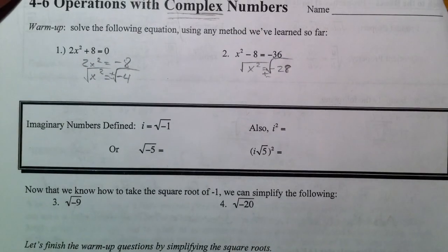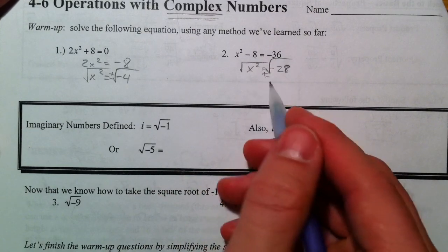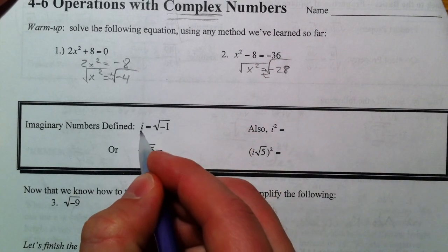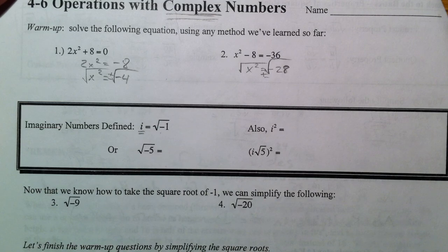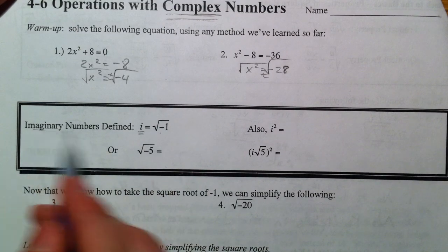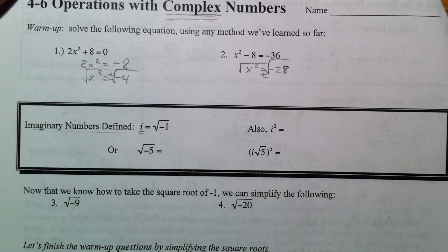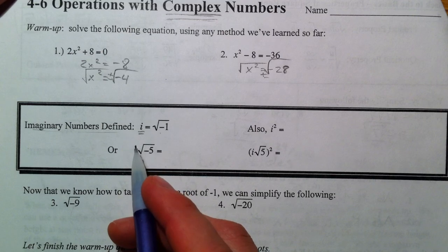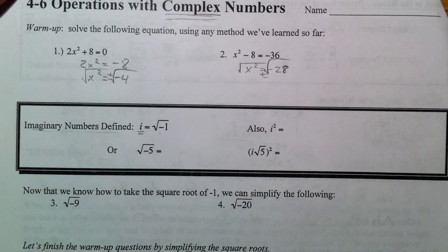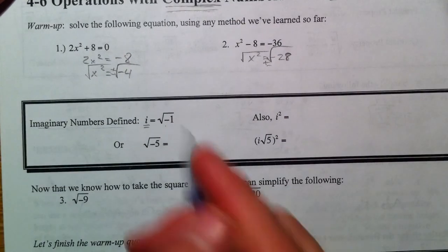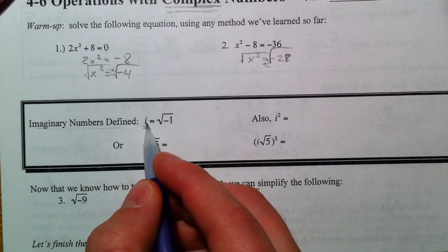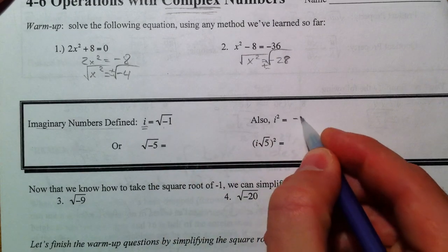So here's what we're going to do. We're going to define the square root of negative 1. The square root of negative 1 is going to be i, which stands for one imaginary unit. This is what an imaginary number is. And if you square both sides, i² equals negative 1.